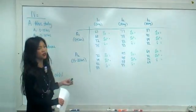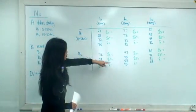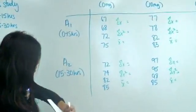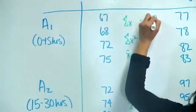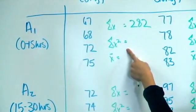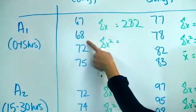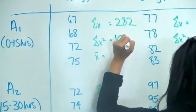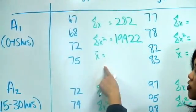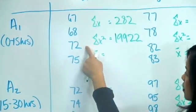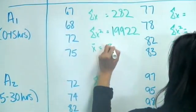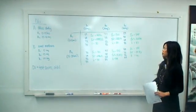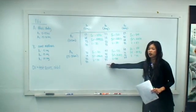The first thing we want to do is calculate our column statistics. For each of the six groups of data, you want to calculate the sum — so 67 + 68 + 72 + 75 = 282. Then you want to calculate the sum of x-squared, and lastly the mean. We've filled in the rest of the column statistics for all groups.